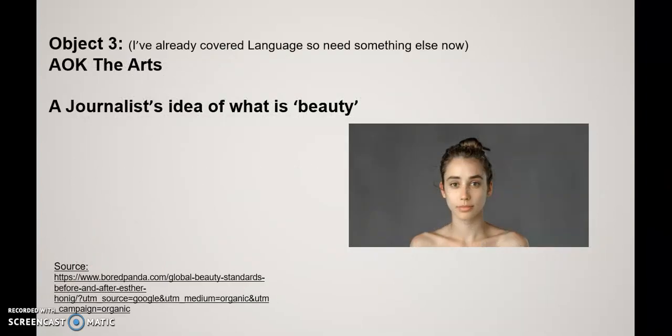For the third object, I'd done technology and language, so I thought the arts would be an interesting area to look at. There's nothing to stop you doing all three objects on the same area of knowledge, but if you do you have to make sure the points you make are different — otherwise you're just repeating yourself, and you certainly don't need to compare the objects. The particular object I found was a journalist: she sent her image to digital editors around the world in different countries and cultures and basically said 'Can you make me beautiful based on your standards of beauty?' — and I thought that ties in very nicely with bias and whether it is inevitable, and what we agree is beautiful.